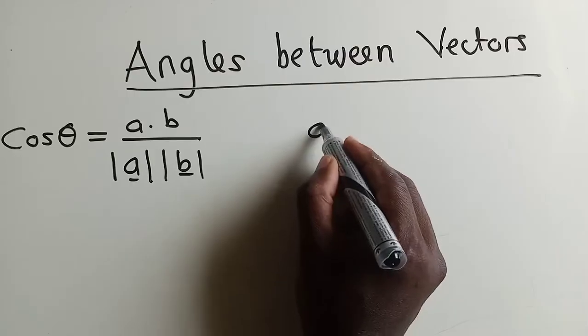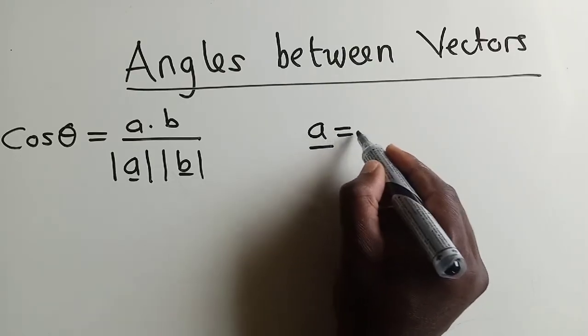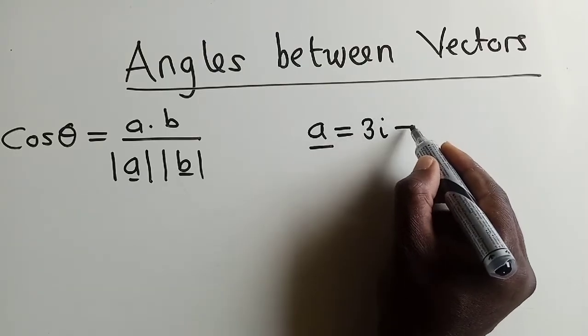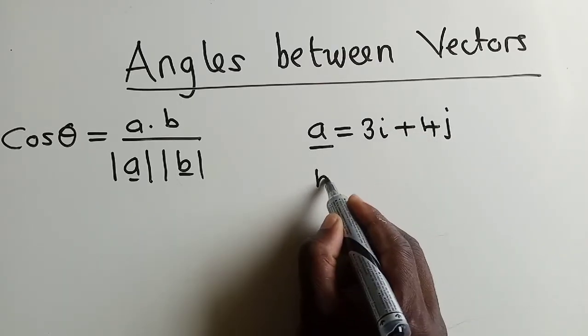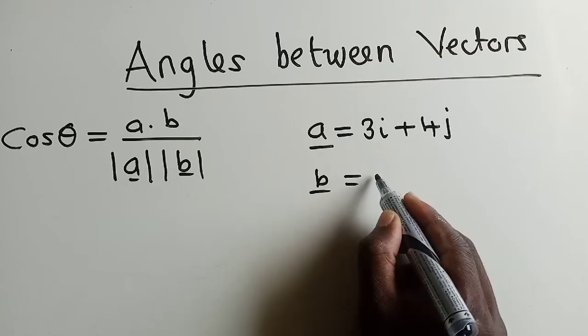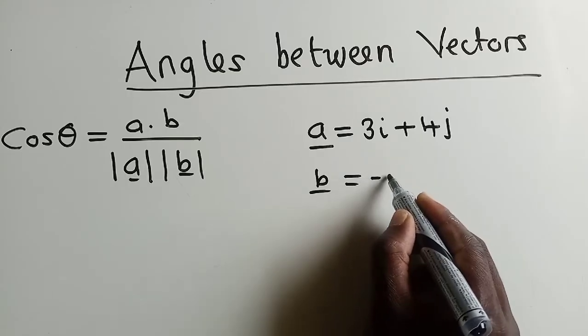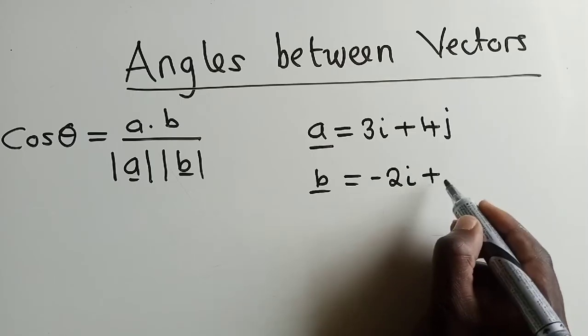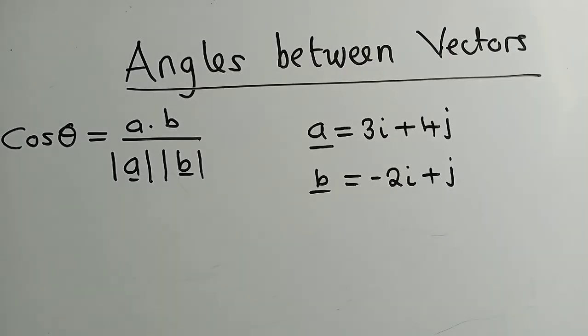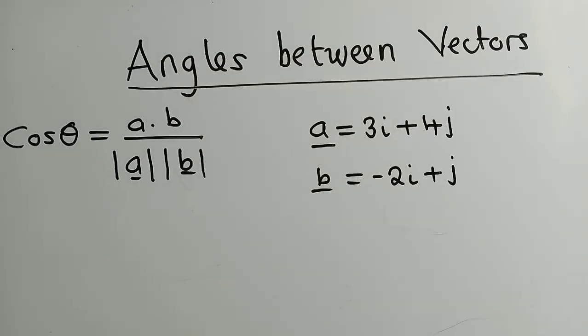Let's say you've got vector A, which is equal to 3i plus 4j. Vector B is equal to negative 2i plus j, or 1j. So, we've got those two vectors.